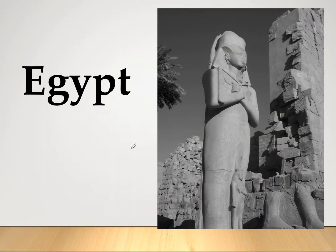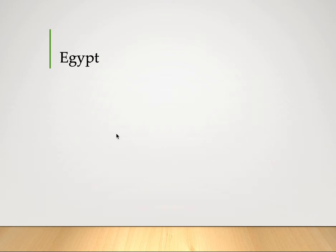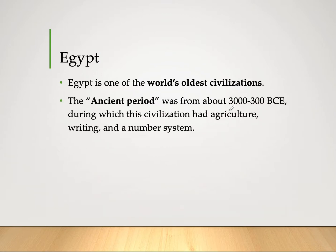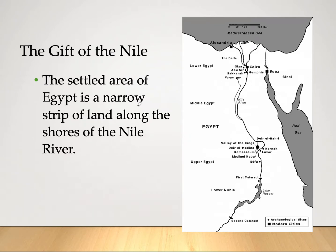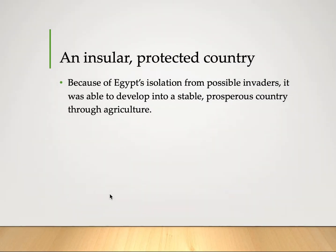We're going to focus here first with Egypt. Egypt is found in North Africa and is one of the most populous countries in the world right now, and one of the world's oldest civilizations. The ancient world was from about 3000 to 300 BCE, during which this civilization had agriculture, writing, and a number system. Egypt is a narrow strip of land along the shores of the Nile River, and because of its isolation from possible invaders, it was able to develop into a stable, prosperous, and successful country.